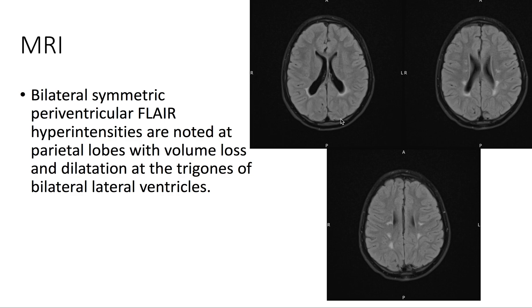...we see hyperintensities noted about the parietal lobes with volume loss and dilatation at the trigones of the bilateral lateral ventricles.